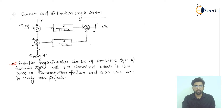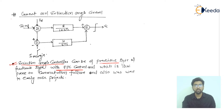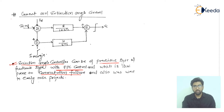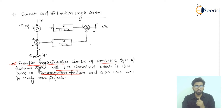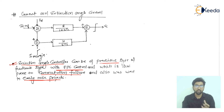The extinction angle controller, which we have seen in the last lecture, can be a predictive type or a feedback type with EPC control — that is, equidistance pulse control. Using these schemes, the system is less prone to commutation failure, which is caused by overlapping. This was also used in the early HVDC projects and was a main technological innovation at that time.